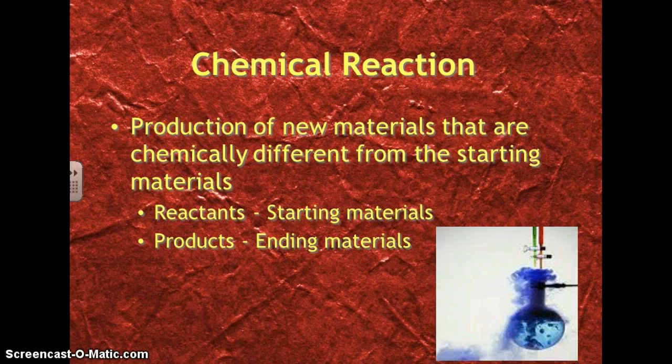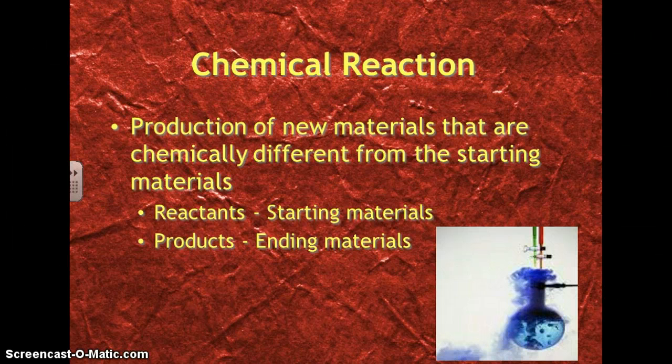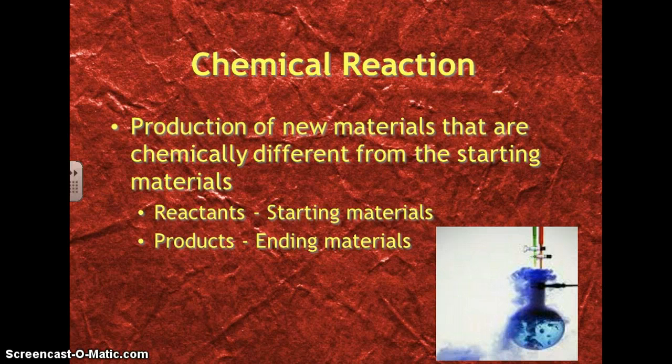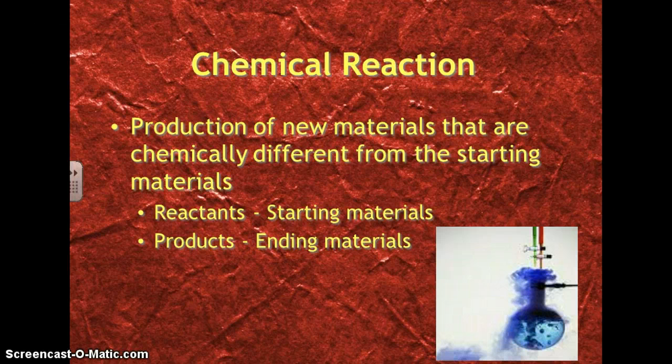Chemical reactions. When we have a chemical reaction, we're going to produce new materials that are chemically different from what we started with. So, the starting materials of a chemical reaction are called reactants. And the ending materials are called products.